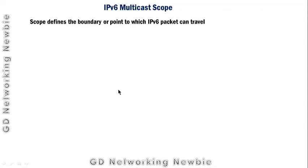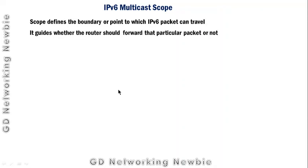Today we are going to discuss IPv6 multicast scope. As you know, we don't have broadcast in IPv6 — we only have multicast. The scope defines the boundary or point to which IPv6 packets can travel. Just like we have local area networks, metropolitan area networks, and wide area networks, the scope guides whether a router should forward a particular packet or not.